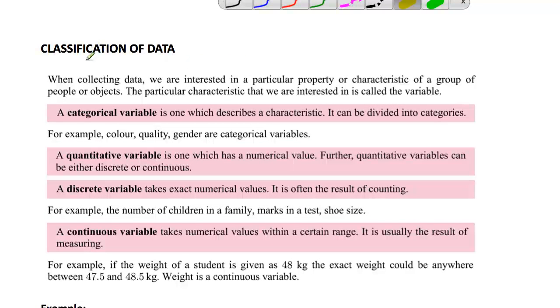This lesson looks at the different types of data, classifying data into a number of different groups. You need to learn these groupings and know what they contain and maybe give some examples of them. When collecting data, we're interested in a particular property or characteristic of a group of people or objects. The particular characteristics are called variables because they change depending on the different situations. Here are the different variables that we can look at.